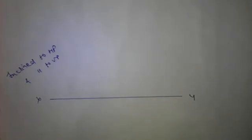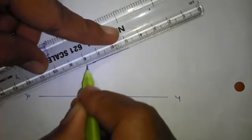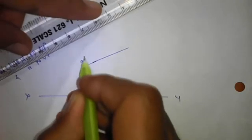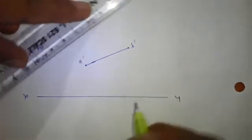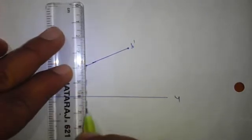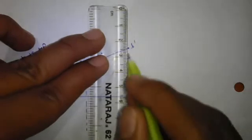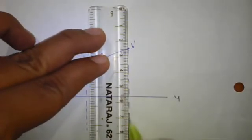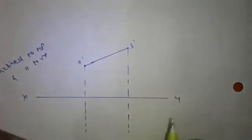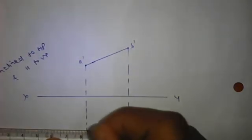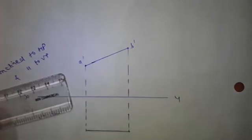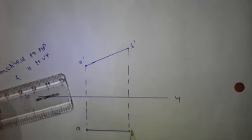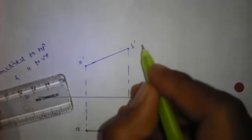Next condition: inclined to HP and parallel to VP. In this we will see the true shape in the front view, so we draw the front view first and then the top view. This is the front view A-dash B-dash, and now we draw the top view by drawing the projectors of this line. We join these projectors, making point A and B — this is the top view and this is the front view.